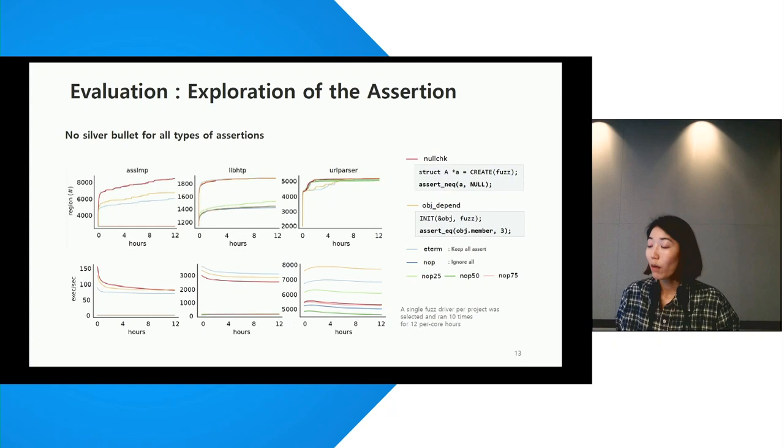We found that generally, preserving assertion checks on null or object produced a better result. However, the results varied between libraries. With this in mind, we propose that developers familiar with their own test code select the most suitable rule.